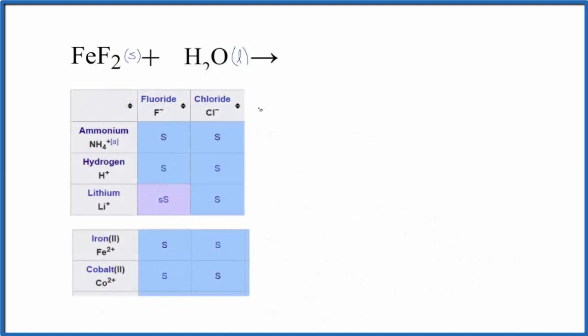So this is part of a larger solubility table. Here's our fluoride F minus, and here's the iron two Fe2+ ion. So Fe2+ and you have that fluoride ion, that S means it's going to be soluble. When you put FeF2 in water it'll dissolve and dissociate into its ions.